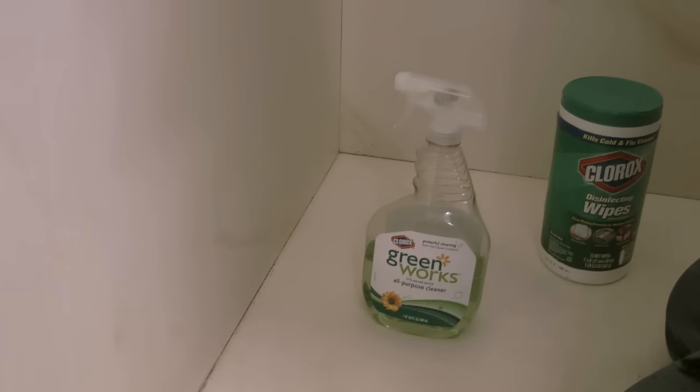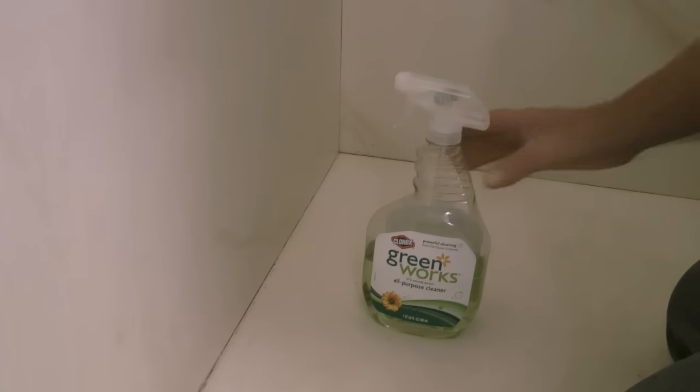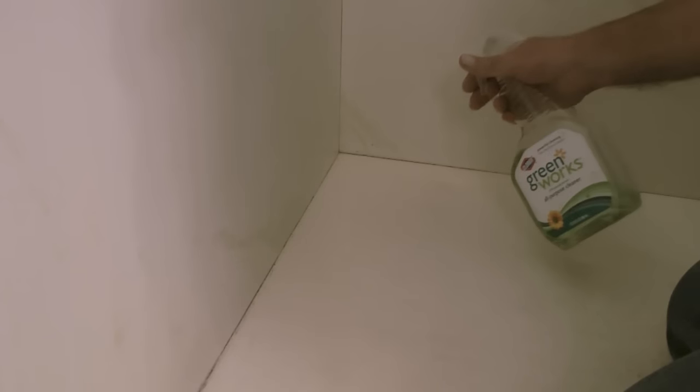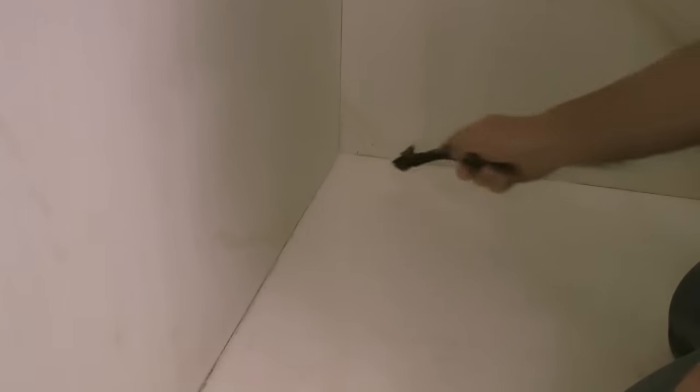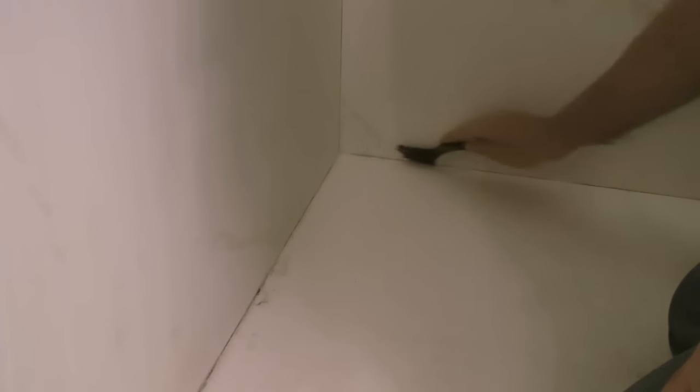The next step is to take an all-purpose cleaner and a small nylon bristled scrub brush and clean all of the seams where the shower walls meet the shower floor. So after spraying a little bit of the cleaner on I will scrub all of the seams and try and remove what's left of the moldy silicone.